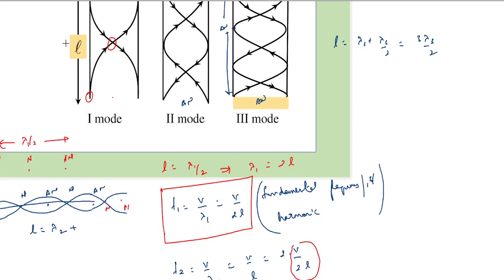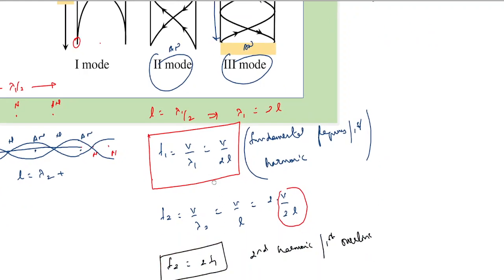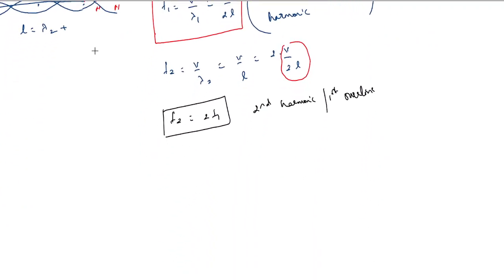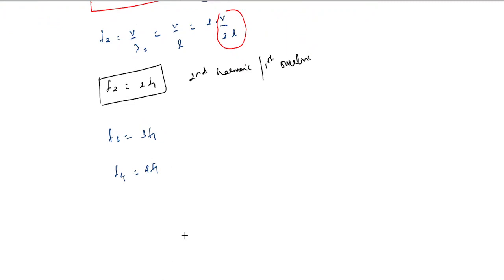In each successive mode we add half a wavelength. In the first case we have half wavelength, the next mode adds a full wavelength, the next adds one and a half wavelengths. Therefore f3 equals 3 times f1. If we look at the ratios of the frequencies, they are 1 : 2 : 3 : 4. In this case we get both odd as well as even harmonics — unlike in a closed pipe, where we only get odd harmonics.